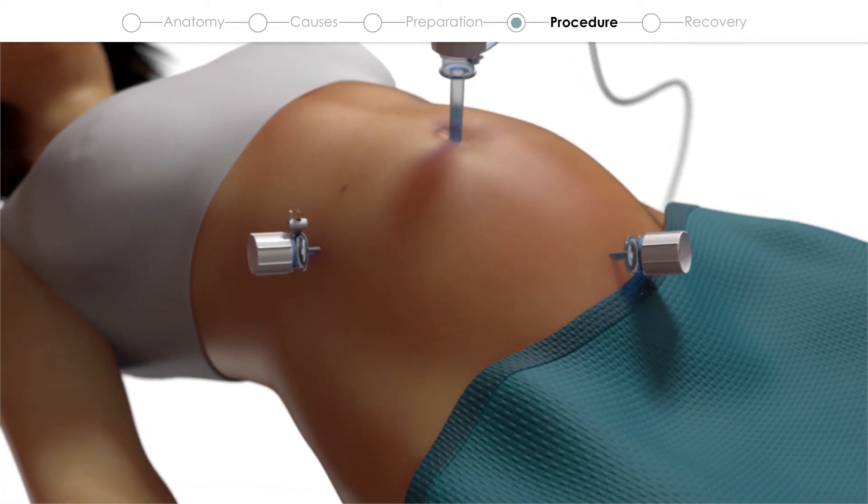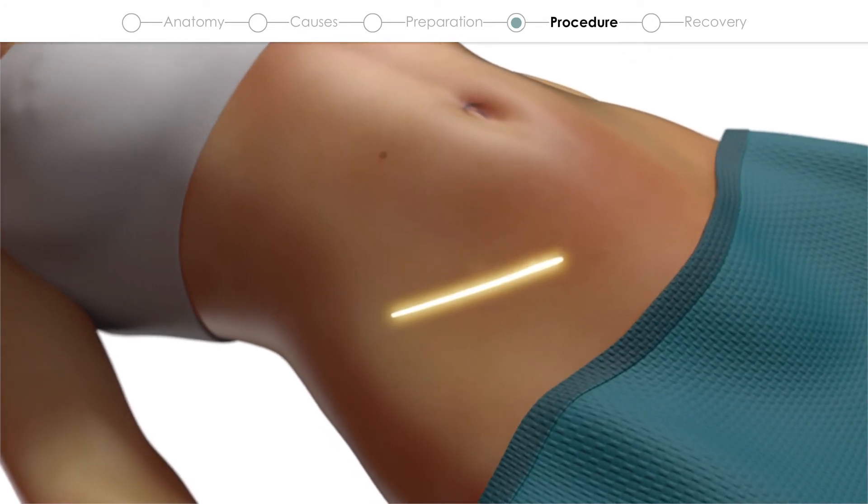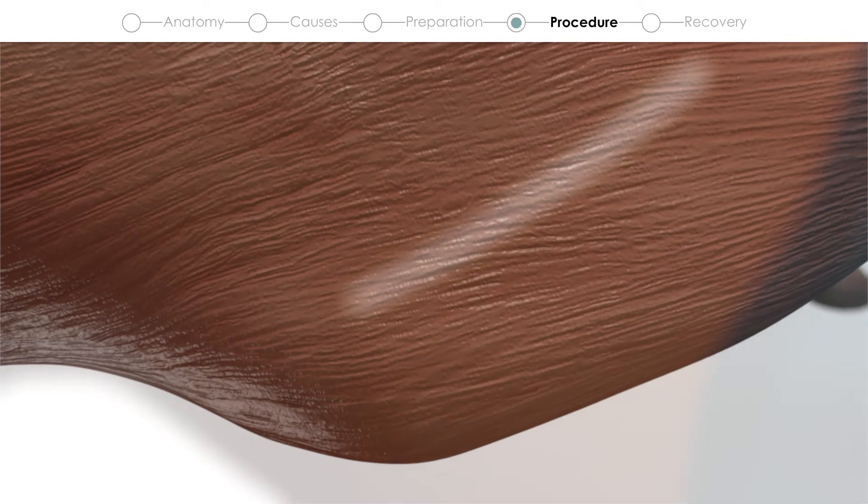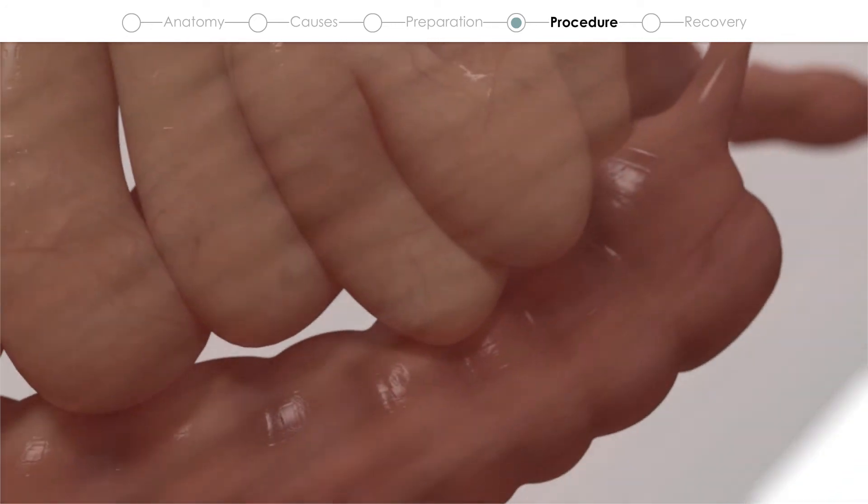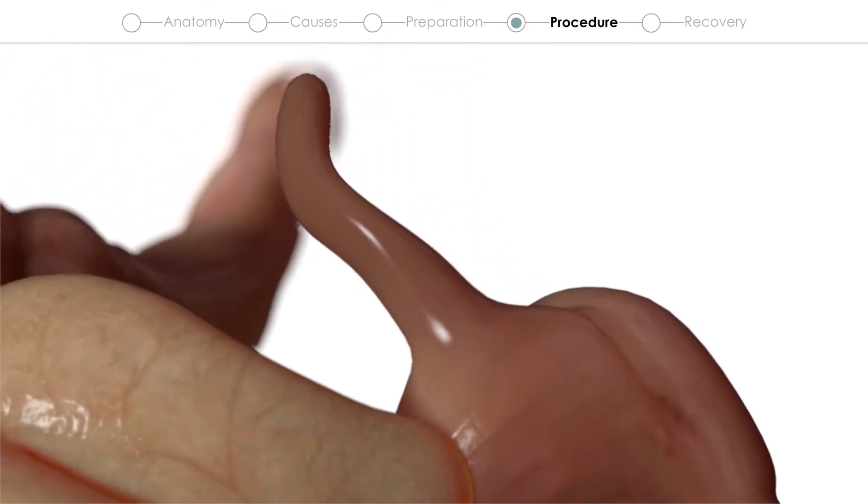In the case of a laparotomy, a single incision around seven centimeters long is made in the lower right portion of the abdomen. The surgeon then parts the stomach muscles to get access to the inflamed appendix and removes it.